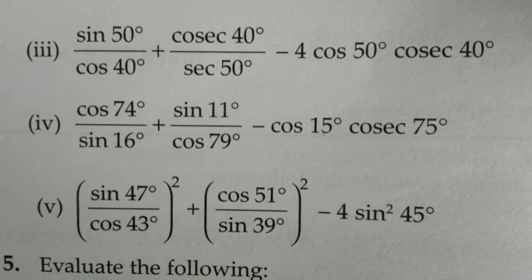For number 5, you first expand the squares. For the sine and cosine terms, since 47° and 43° are complementary, cos can be converted to sin, which are complementary. Then you square it and simplify the squares.